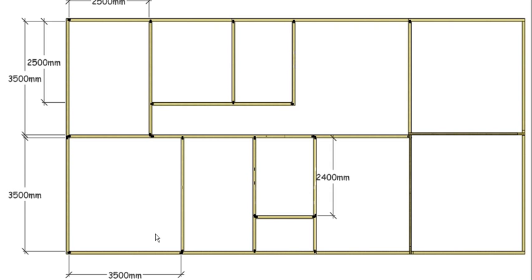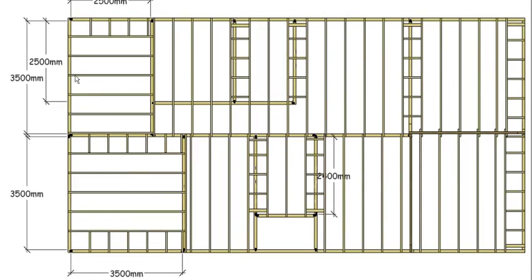This is a plan of our top plates and I've put in the necessary dimensions to work out the information we need. There are our ceiling joists, and you can see these two end rooms — they're running left to right here and here, and the rest of the house they're running up and down the screen. These joists are spanning 2.5 meters.